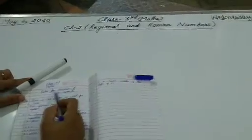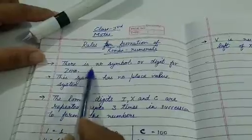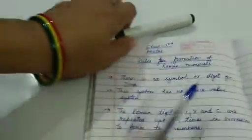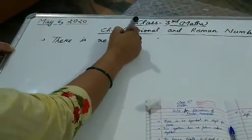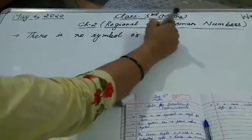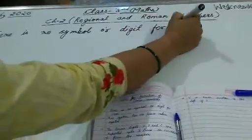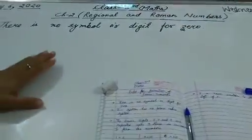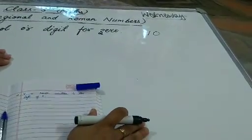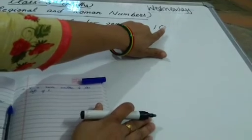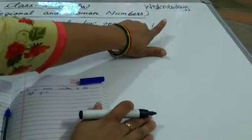But there are some rules for the formation of Roman numerals. First point is there is no symbol or digit for zero. Just like you have written 10 as 1 and 0 — in our number system, both the regional system and the international system, zero is there. But in Roman Numbers there is no symbol or digit for zero.